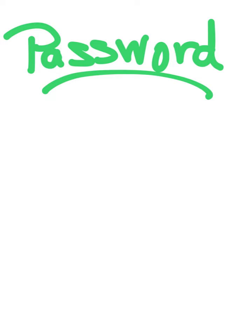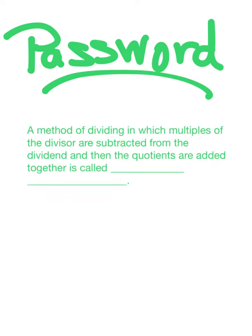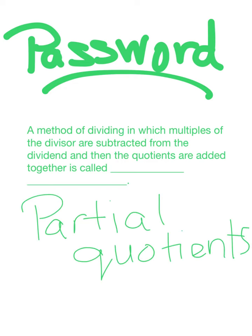Let's take a look at our password for today's lesson. Be sure to record the password in your planner and bring it with you to class tomorrow. Our password pertains to a lesson from chapter two: a method of dividing in which multiples of the divisor are subtracted from the dividend and then the quotients are added together. That's right — partial quotients. Be sure to record that in your planner and bring it with you to class tomorrow.